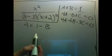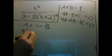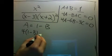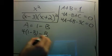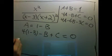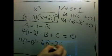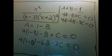I can plug that in for a in the other two equations. So I get 4, 1 minus b minus b plus c equals 0, and 4, 1 minus b minus 6b minus 3c equals 0.